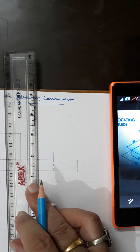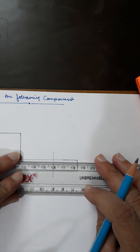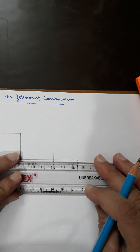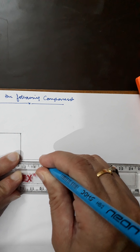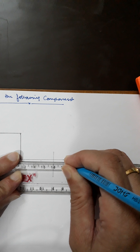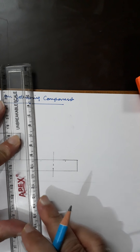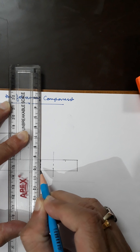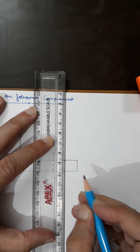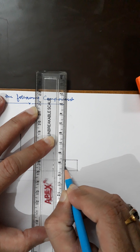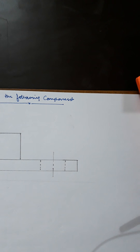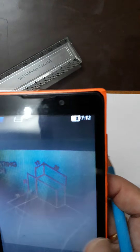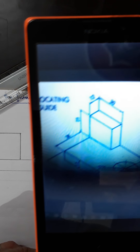Now draw the dash lines for the circle — it is 12.5mm both sides. Mark 12.5 on both sides, then join with dash lines, because this portion is hidden and you show it using dash lines. This is the front view of the component. Whatever is hidden you show with dash lines — that is the purpose of the dash line.